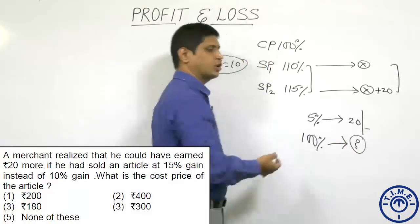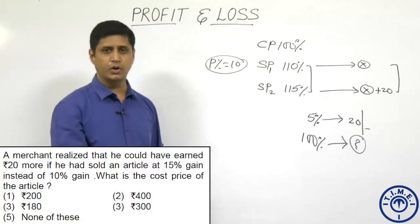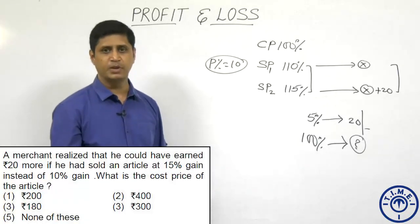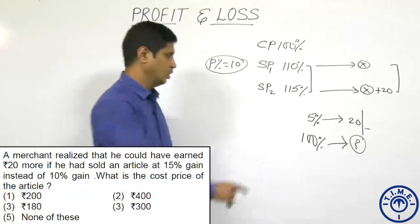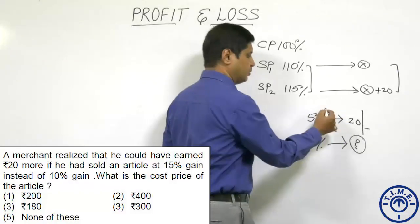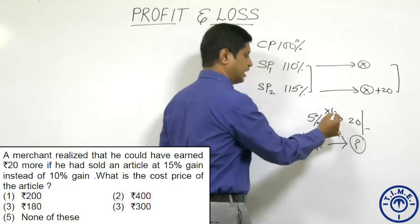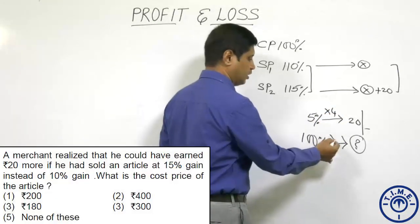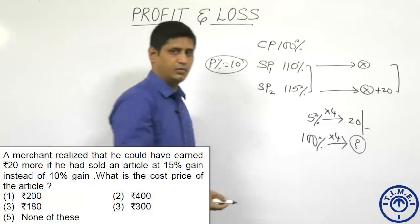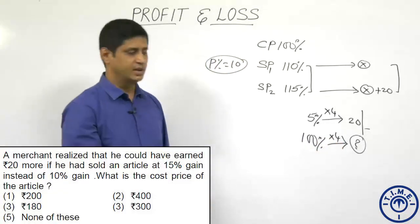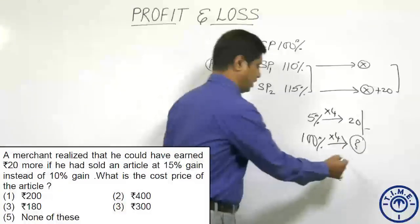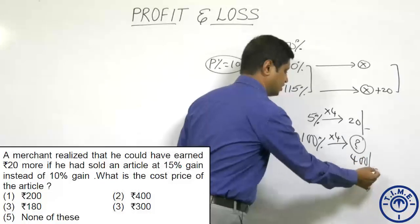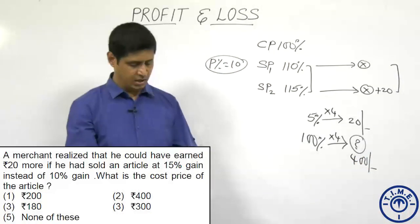By doing cross multiplication, observe the multiplication factor: 5 is becoming 20, which means it is 4 times. The multiple of 4 into 100 is 400. The cost price is ₹400. The right option is 2.